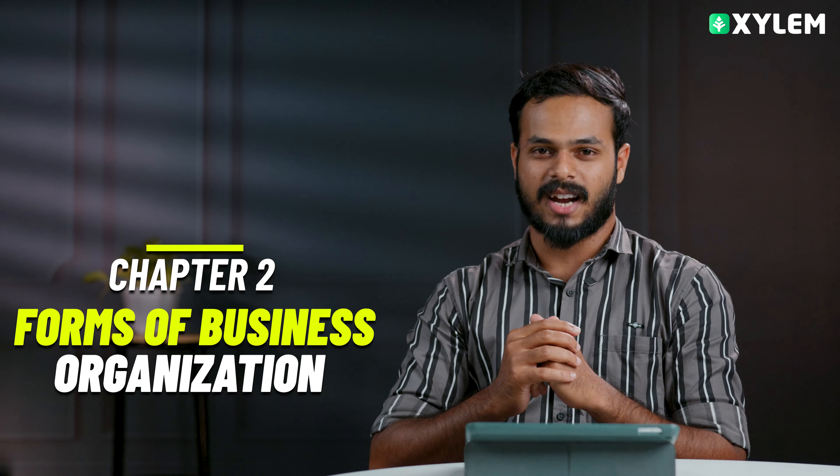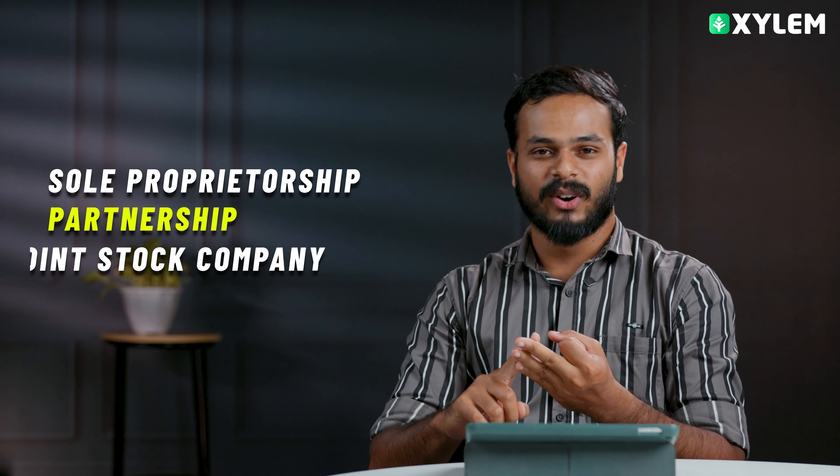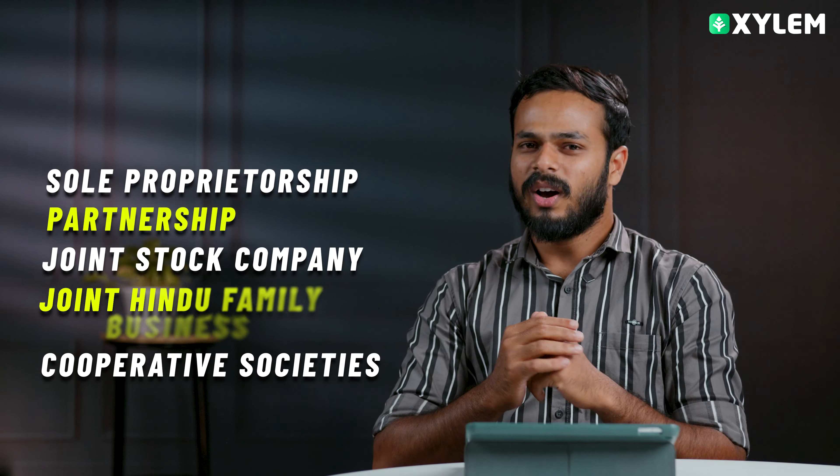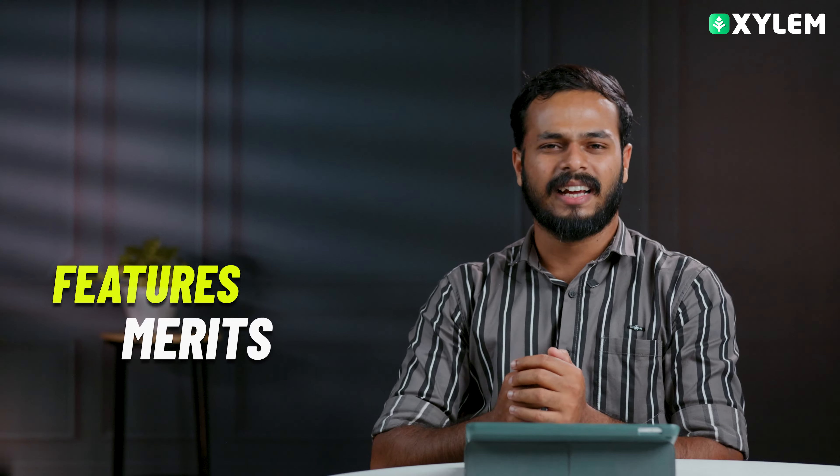We are going to ask about the forms of business organization. We are going to study five forms: sole proprietorship, partnership, Joint Stock Company, Joint Hindu Family Business, and Cooperative Society. If you are asked about the forms of business, you should know how many forms there are, what are the features, what are the merits, and what are the demerits.